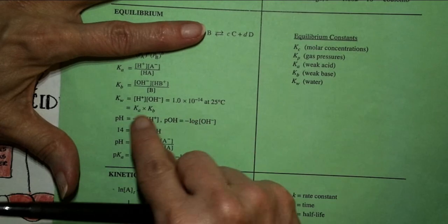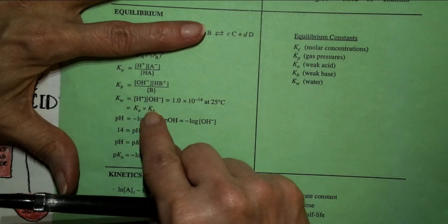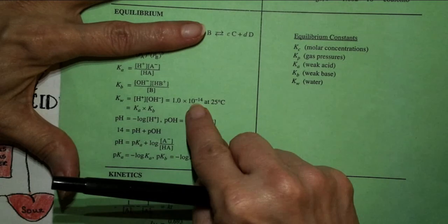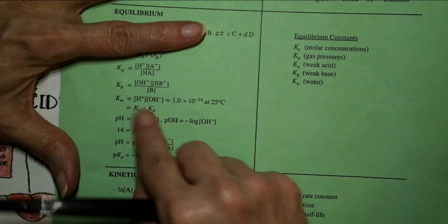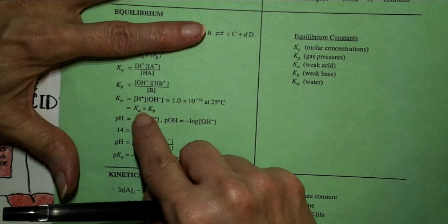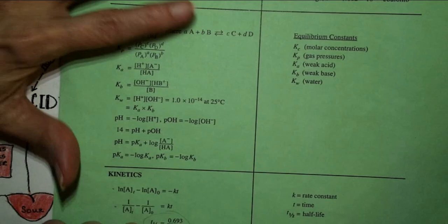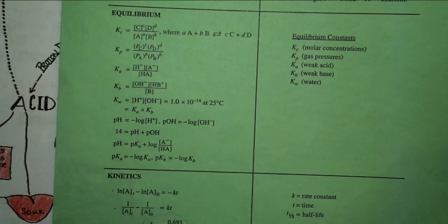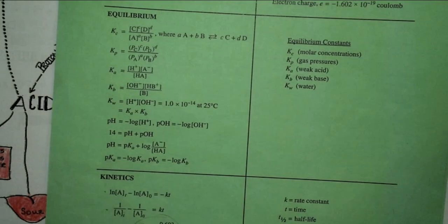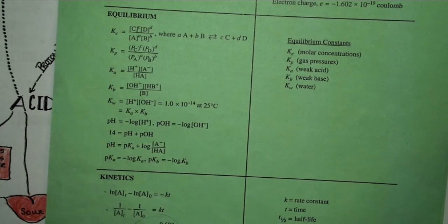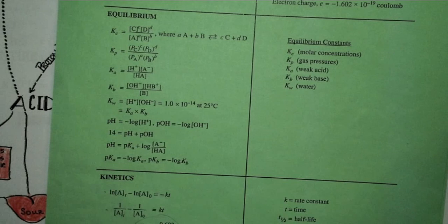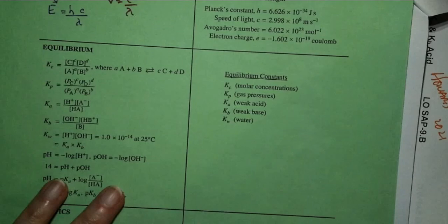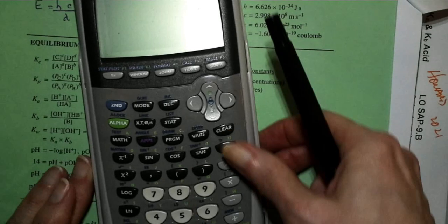Ka times Kb is equal to 1×10⁻¹⁴ — always, if you multiply those two together, that's what you're going to get. Someone decided they didn't like writing out all that '1 times 10 to the negative 14' business, so someone said, fine, let's just take the negative log. So if you take the negative log of 1×10⁻¹⁴, what do you get?